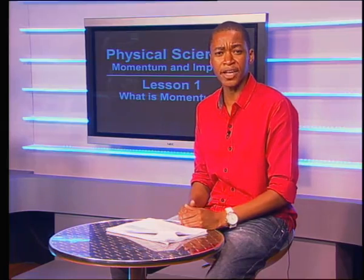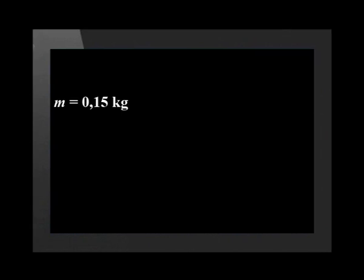Let's look at another example to understand the vector nature of momentum better. Consider the momentum of a tennis ball that is dropped to the floor and bounces back up. The tennis ball has a mass of 0.15 kilograms and is dropped to the floor at an initial velocity of 6 meters per second and bounces back up at a final velocity of 3 meters per second.